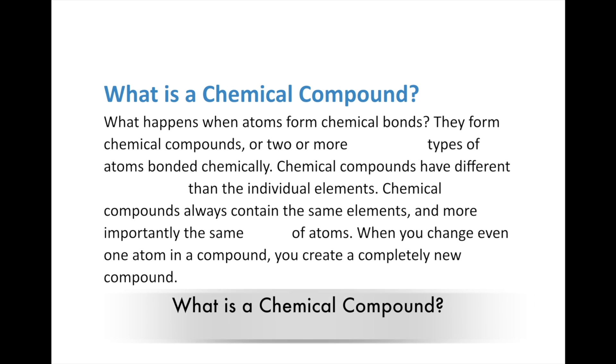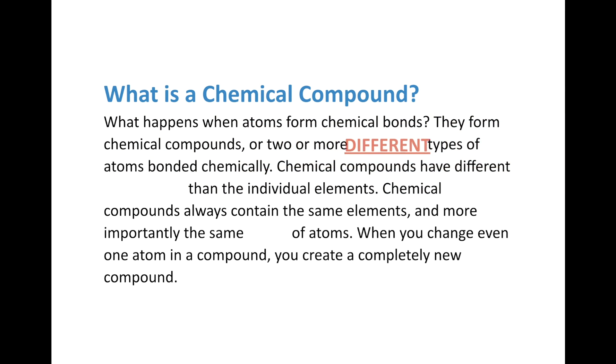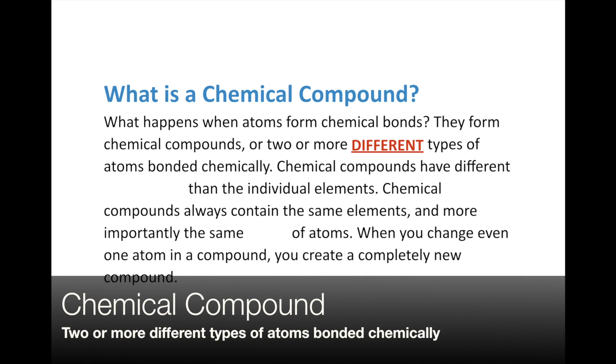Atoms will bond with each other in one of two ways in order to get that full valence energy level. Let's fill out our graphic organizer. Chemical bonds form because valence energy levels always want to be filled — either all eight or none, dropping down to the lower energy level. When atoms bond, we form a chemical compound, which is two or more different types of atoms bonded chemically. Molecules follow the same principle but can involve two or more of the same atom.